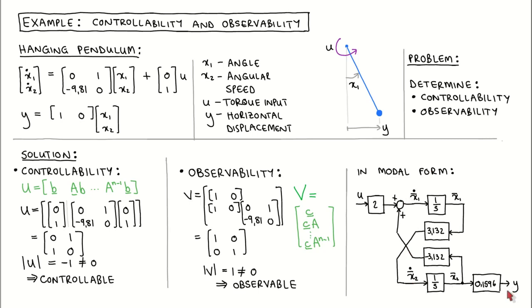Since the plant is controllable, we can go on to designing state feedback. However, let's think about what would be our options if the plant had not been controllable. The controllability matrix is constructed from vector B and matrix A: matrix A models the physical behaviour of the plant, and vector B models the way an actuator influences the plant. If we have the ability to change the actuator or the physical setup, it might be possible to make the plant controllable.